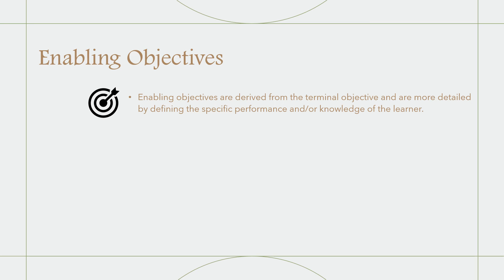Another type of objective is the enabling objective, which follows the terminal objective. Enabling objectives are derived from the terminal objective and are more detailed, defining the specific performance and knowledge of the learner. Enabling objectives define specific, measurable outcomes that must be mastered in order to satisfy the terminal objective. They are supporting objectives for terminal objectives, created by analyzing the terminal objective, and their purpose is to break down the terminal objective into more manageable objectives.